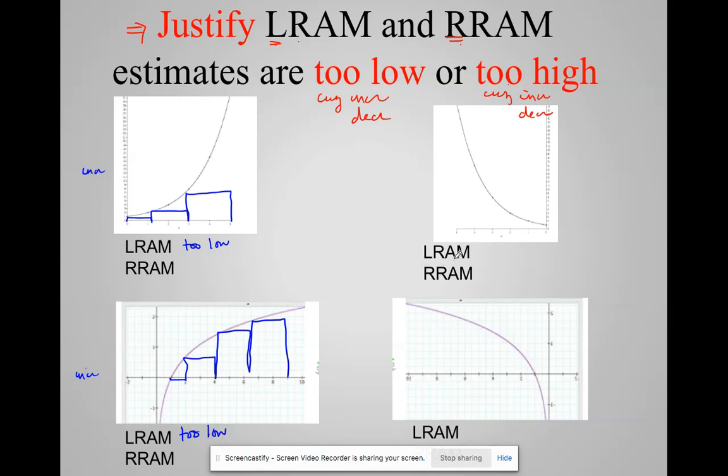However, when my function is decreasing, and again, I have a decreasing concave up and a decreasing concave down, if I'm doing LRAM, right? Here's an interval. LRAM start at the left side. You can see that LRAM is too high. Here's my interval. Go up from the left endpoint.